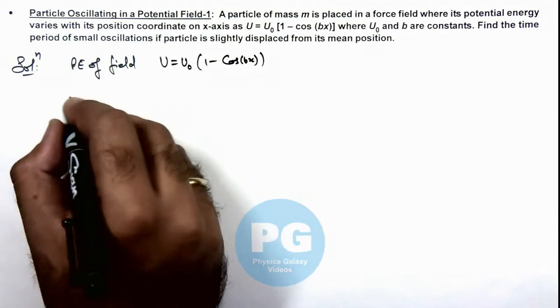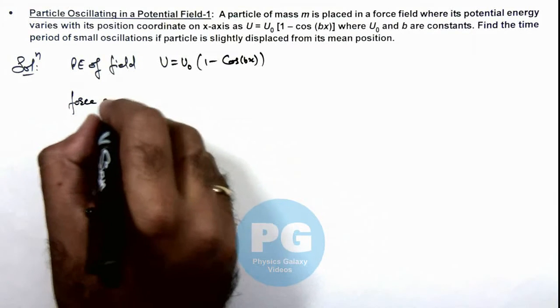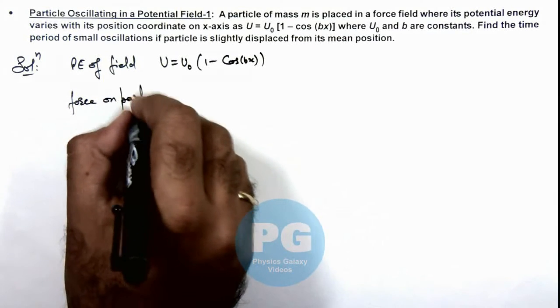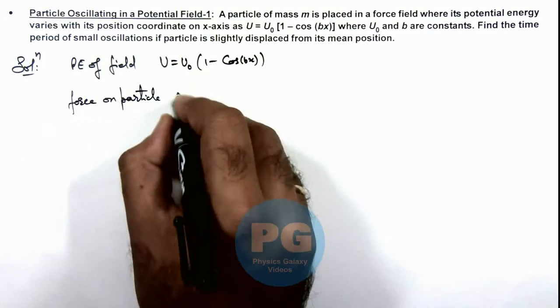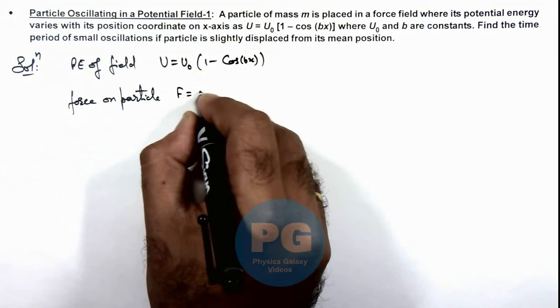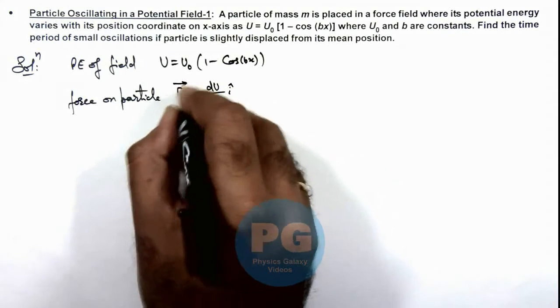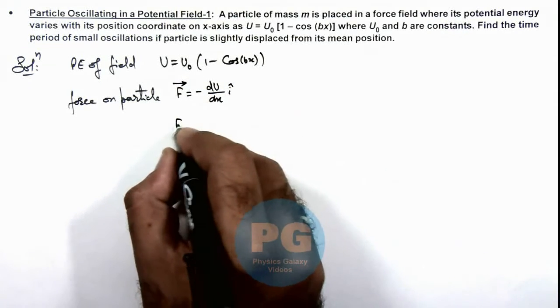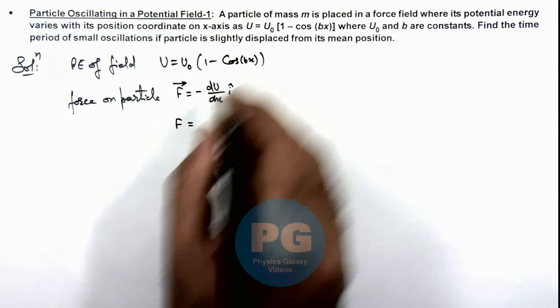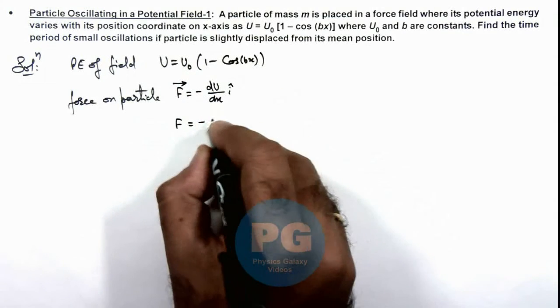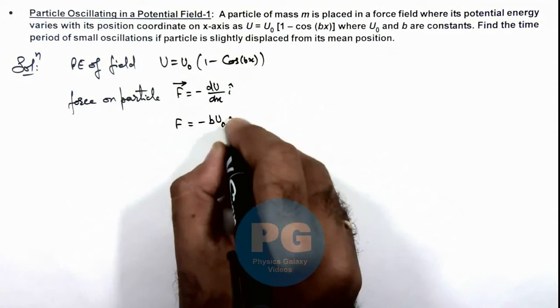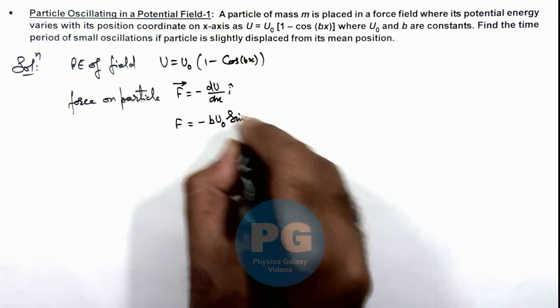we can calculate the force on particle by using the relation F as minus dU/dx i-cap in vector form. So we calculate this force, it can be given as, on differentiating, minus bU₀ sine of bx.